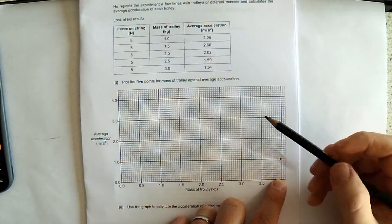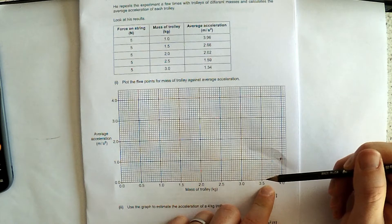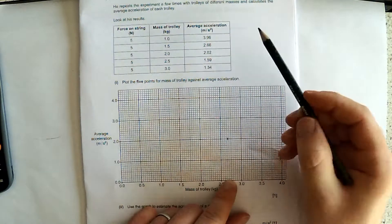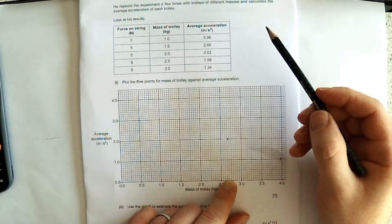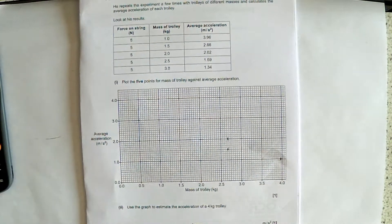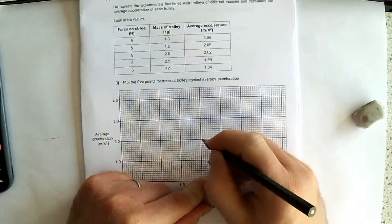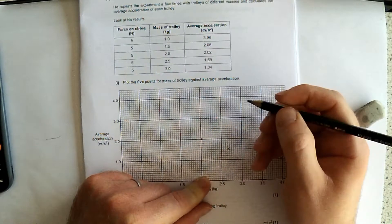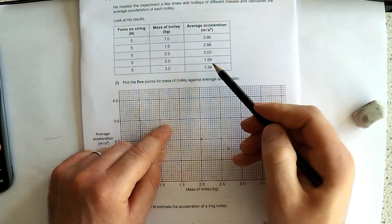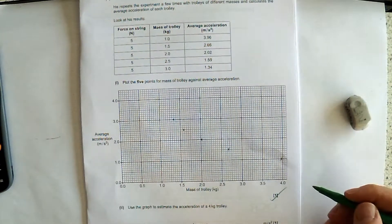You need to be plotting with an accuracy of half a small square. So that's a pretty tight accuracy. And you need to use a pencil because we all make mistakes. That does give me a mark, by the way. That's that plotting mark.